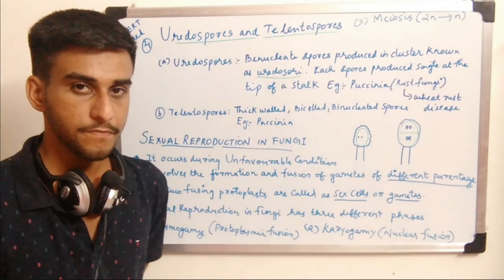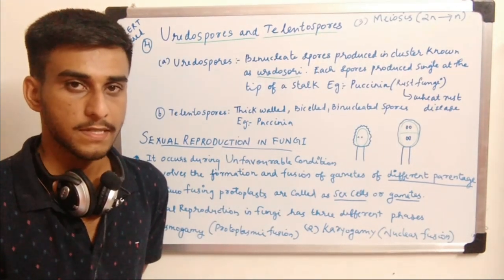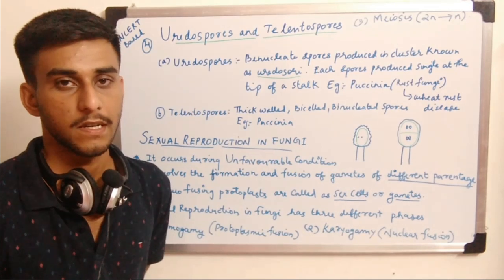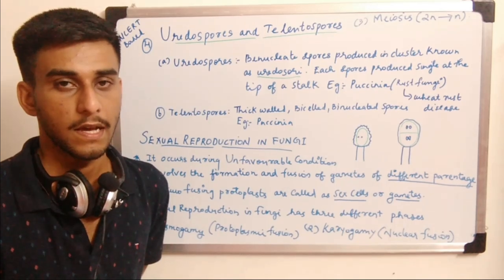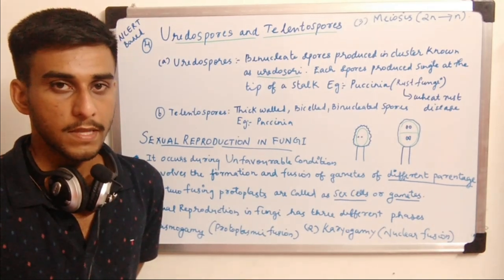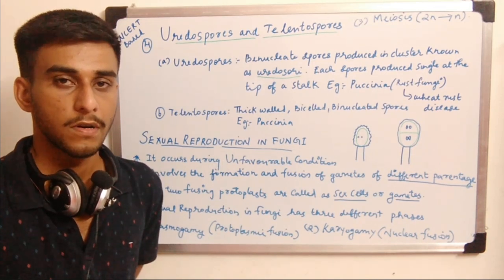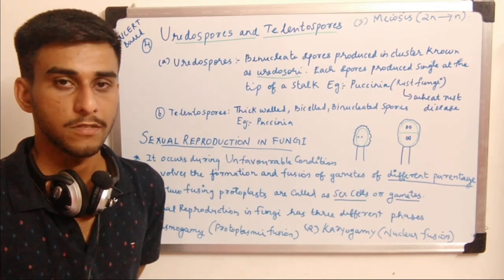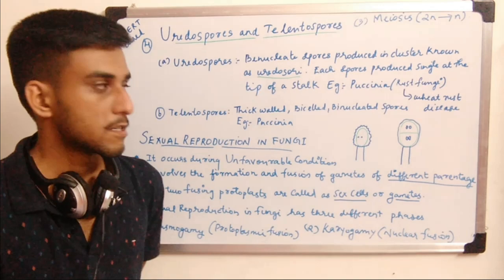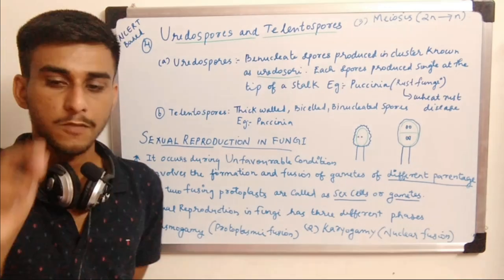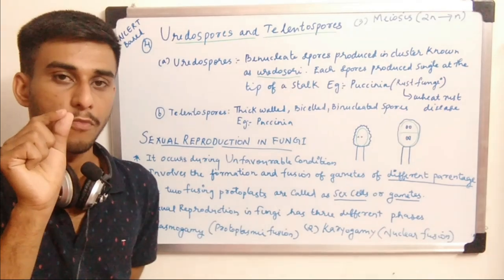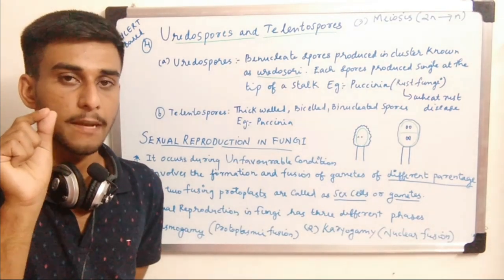A good example of a fungus that produces uredospores is Puccinia, also known as rust fungi or wheat rust fungi, because it causes disease in wheat plants. About 20 percent of plants are affected by this fungus every year. Rust refers to the formation of certain pustule-like formations on the aerial parts of wheat plants.